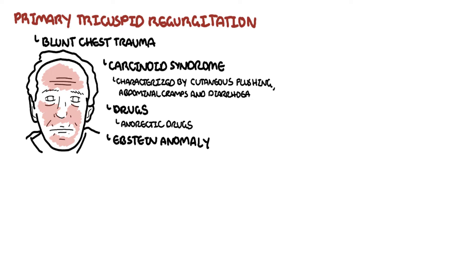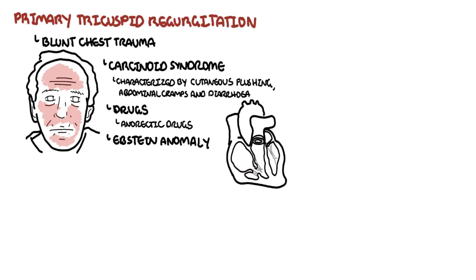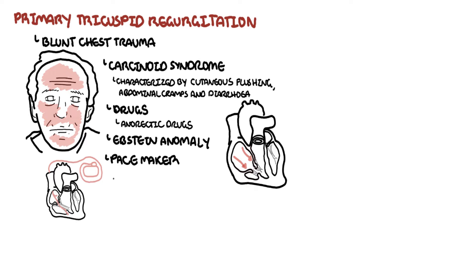Ebstein anomaly is another cause of tricuspid regurgitation and is the most common congenital disease involving the tricuspid valve. It involves downward displacement of a congenitally malformed tricuspid cusp into the right ventricle. Iatrogenic causes include pacemaker leads that cross the tricuspid valve.